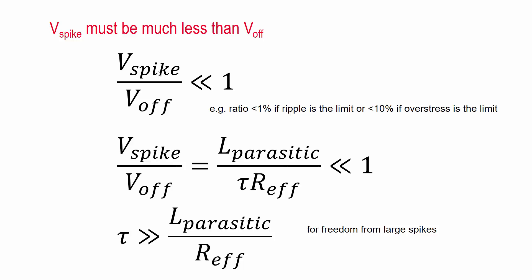The next step is to observe that V_spike must be a lot less than V_off. The ratio should be like 1% if its ripple is the limit, maybe 10% if device overstress is the limit. But in any case, V_spike must be a lot less than V_off.